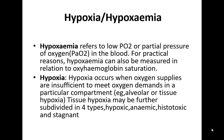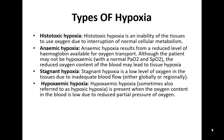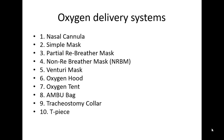These terms are often used interchangeably. Hypoxemia refers to low PO2, or partial pressure of oxygen in the blood. Hypoxia occurs when oxygen supplies are insufficient to meet the oxygen demand in a particular compartment. Alveolar or tissue hypoxia may be further subdivided into hypoxic, anemic, histotoxic, stagnant, etc.